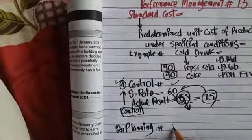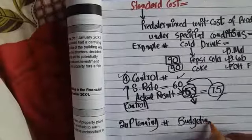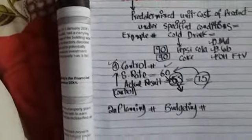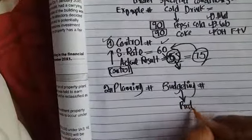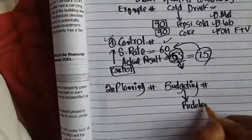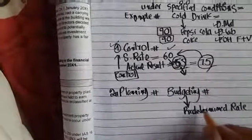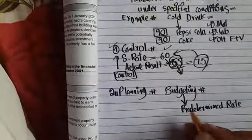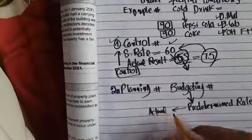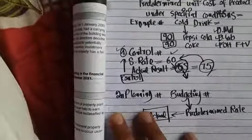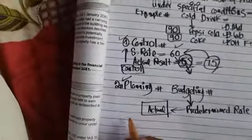The second purpose is planning — specifically for budgeting. When a company prepares a budget, it uses this predetermined rate. Then actual results are compared against it. So the standard cost is used at the planning stage of budgeting.